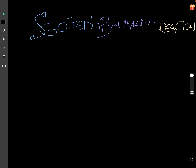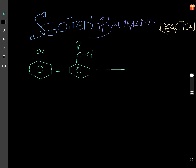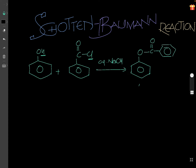What is the Schotten-Baumann reaction? It is a simple benzoylation. When phenol is treated with benzoyl chloride — that is C double bond O Cl — in the presence of aqueous NaOH, removal of hydrogen and chlorine occurs, a kind of esterification, and phenyl benzoate is formed.